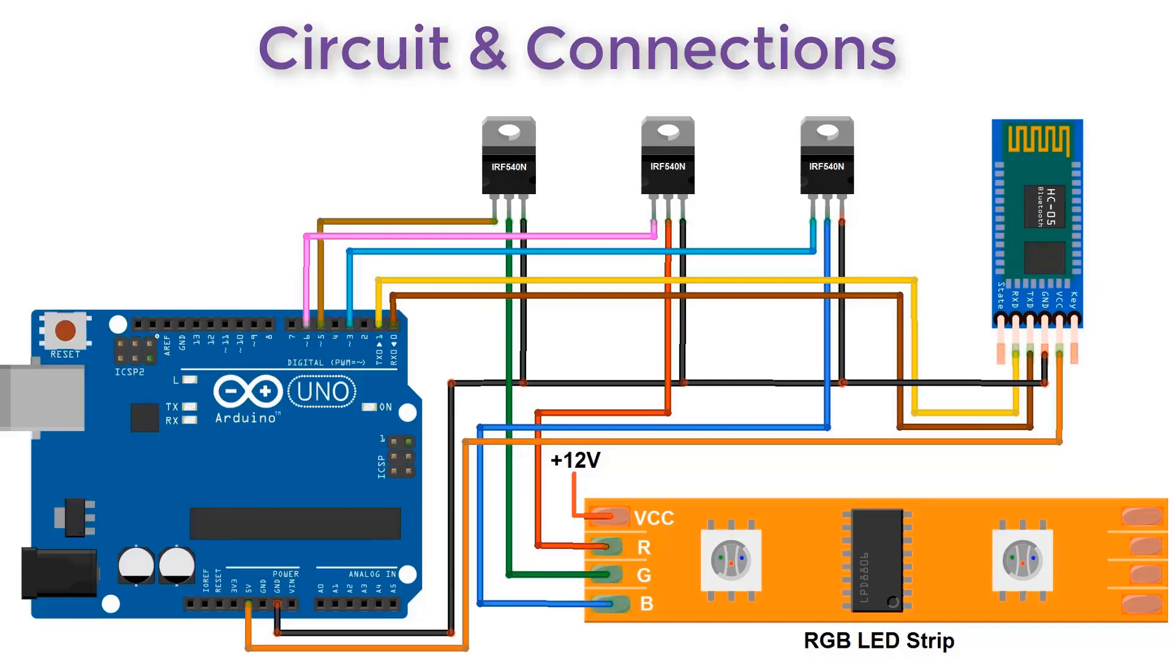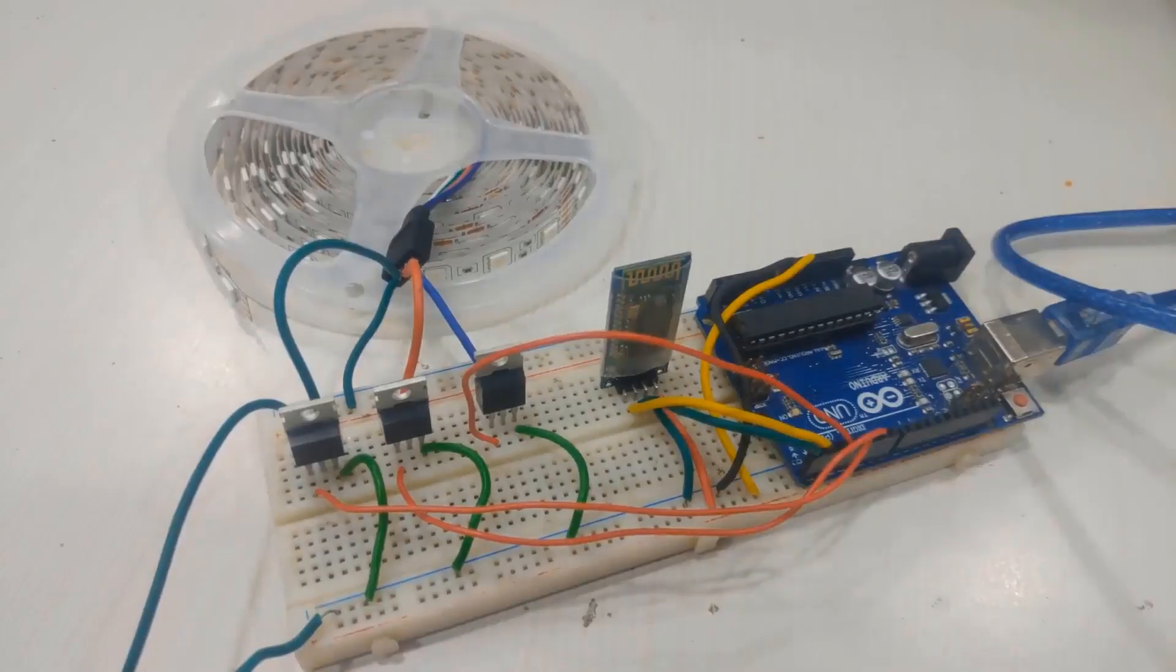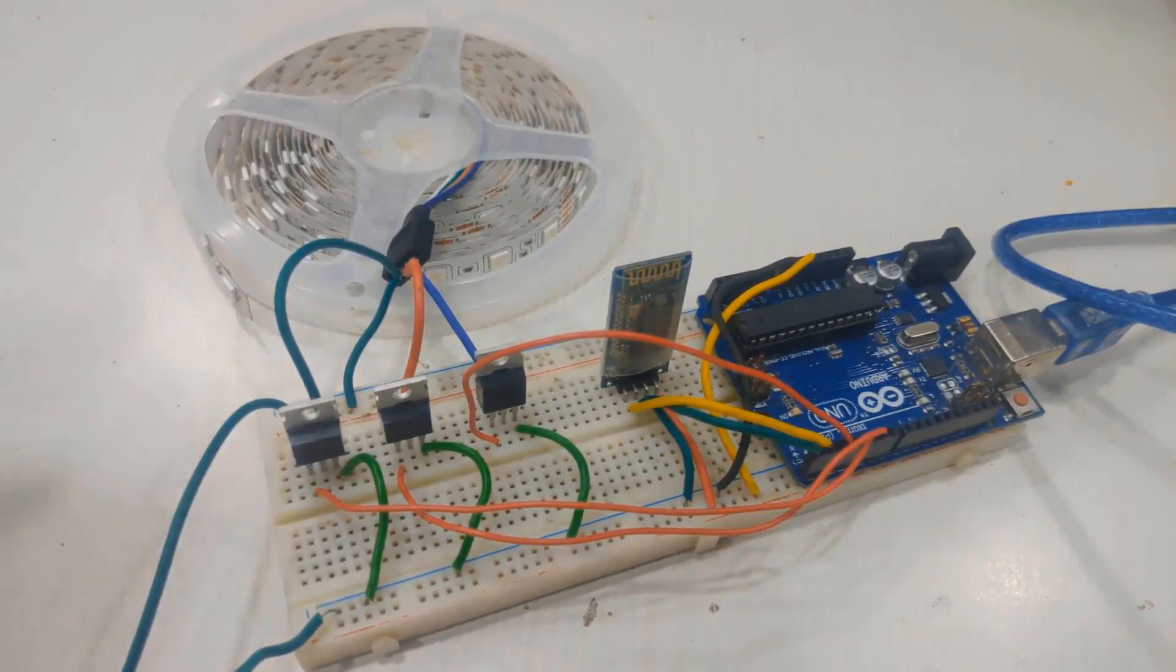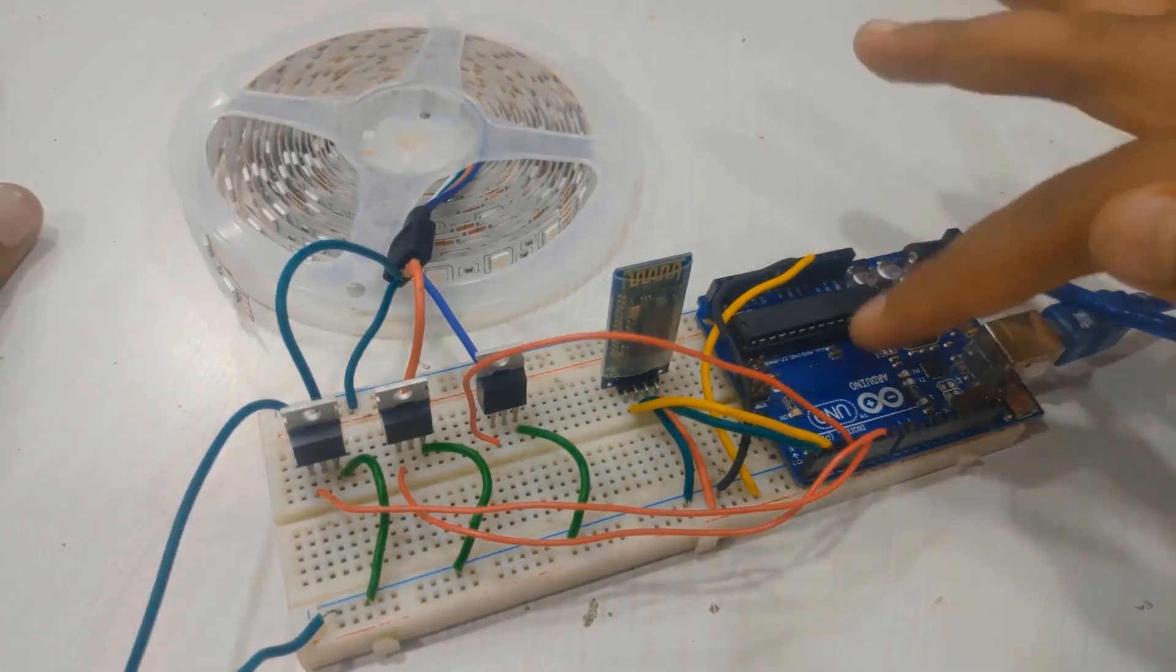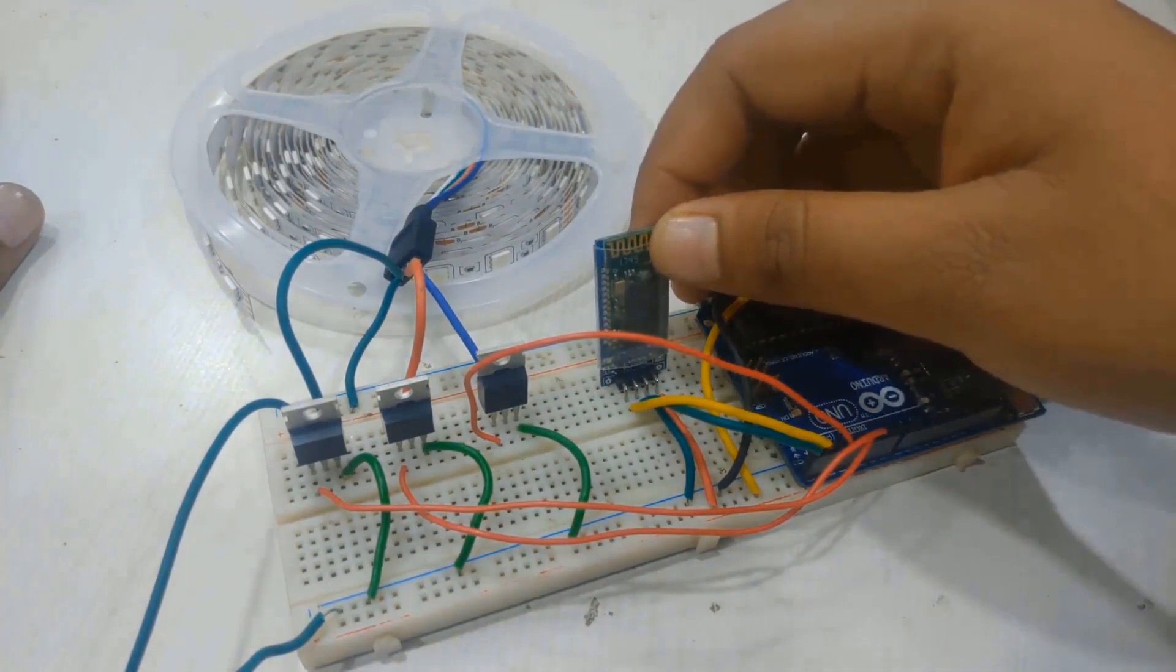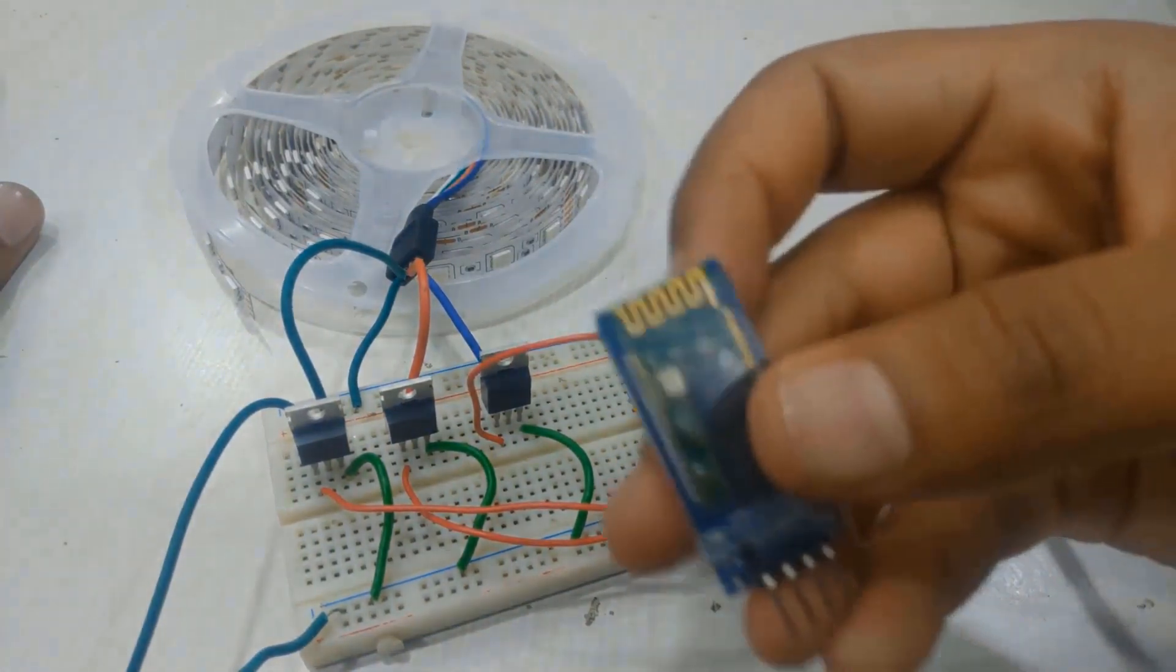We have connected HC-06 Bluetooth module to TX and RX pins for UART communication. The RGB LED strip is connected to 12-volt external power supply. This is how we have connected, exactly the same as shown in the circuit diagram. Arduino UNO board is connected to HC-06 Bluetooth module. You can use HC-05 or BLE 4.0 or any other Bluetooth module.